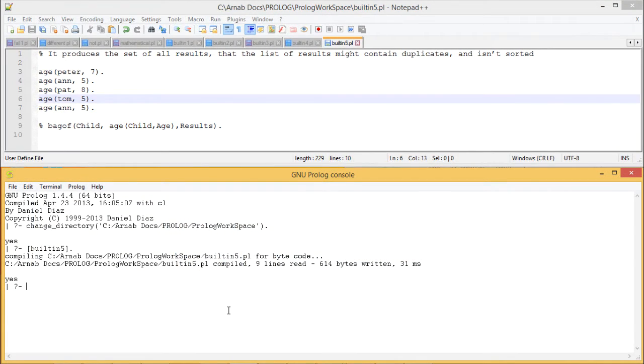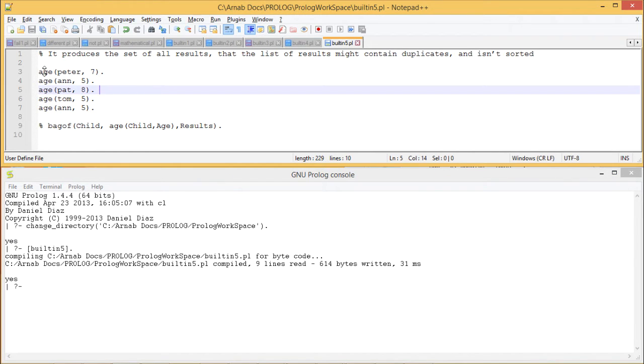Let us discuss with the inbuilt predicate bagof. The basic difference between setof and bagof inbuilt predicates is that in case of the bagof the results might be containing some duplicate values and also it may not remain sorted. In case of setof the duplicate values will be removed. The output will be with unique values only and the output will remain sorted. To have a better idea let us consider these respective facts.